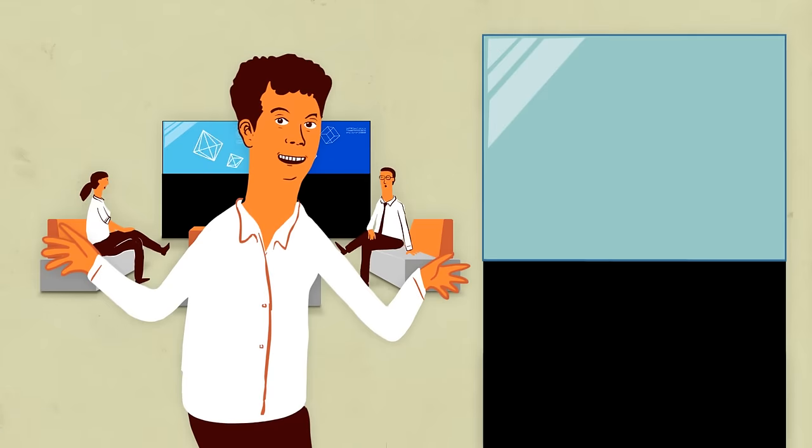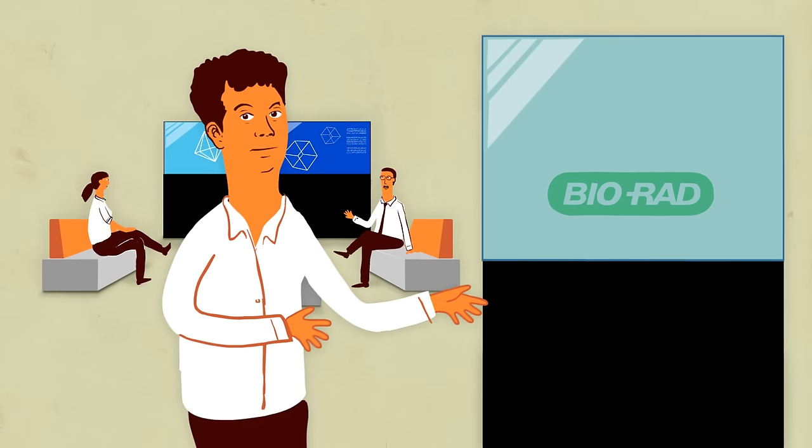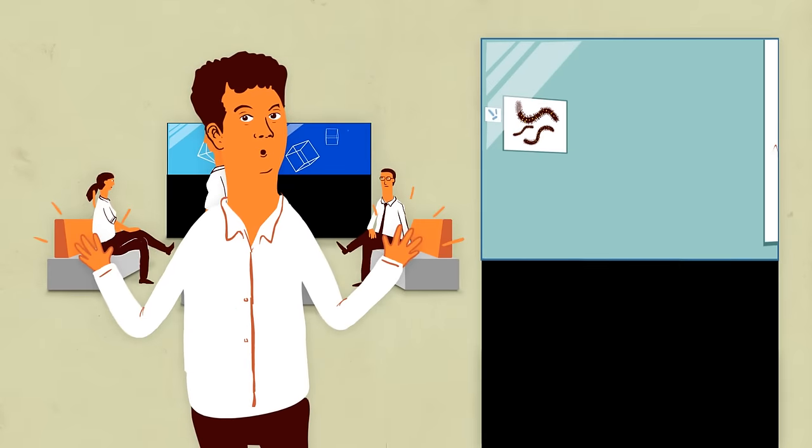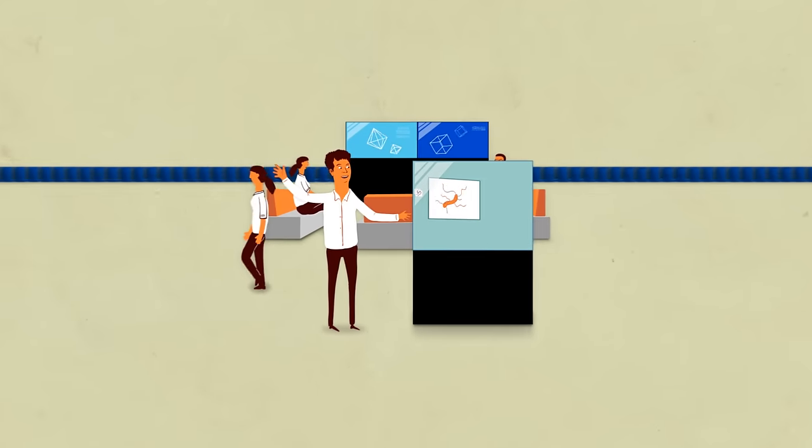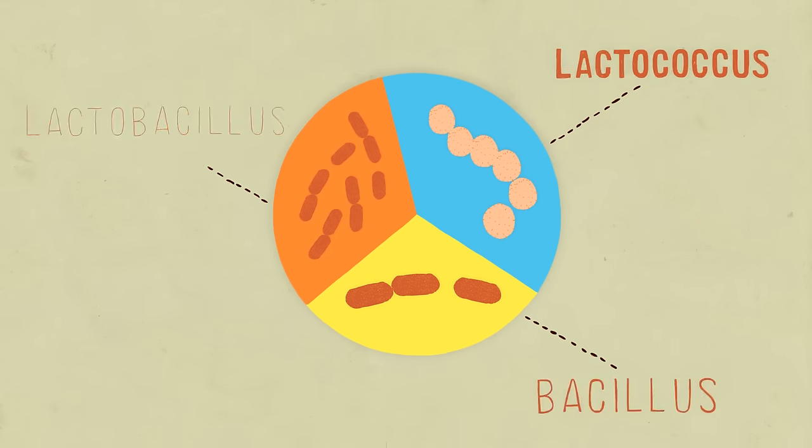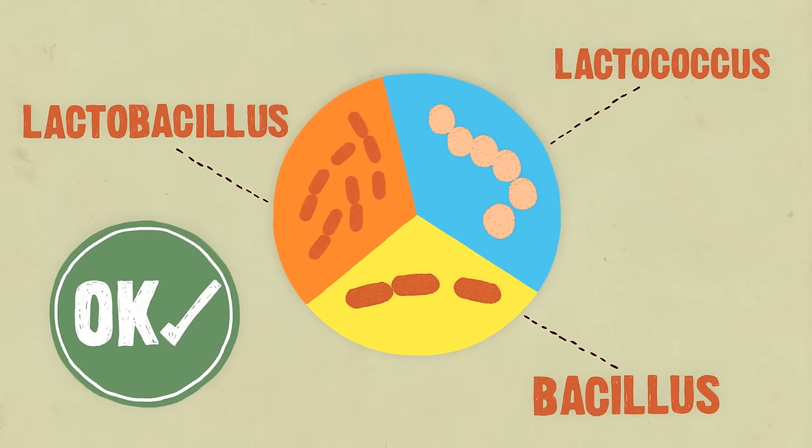That's why Mars and IBM joined forces to sequence the genomes of all the organisms in the food supply chain. That's millions of organisms. But big data is what IBM is good at. The DNA and RNA sequences show you all the harmless bacteria that are found in normal, safe food.